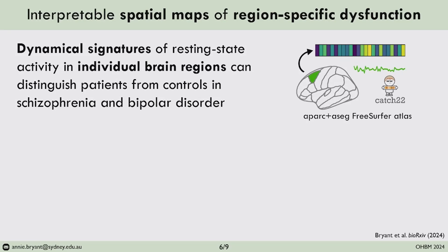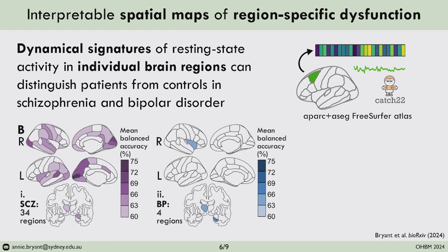I will fly through some of our key results just to give an overview of the types of hypothesis-generating insights that this approach offers, each of which could and should warrant further study in an external validation cohort. We were surprised to find that in schizophrenia and bipolar I disorder, the dynamical signatures of resting state fMRI activity within individual brain regions could distinguish cases from controls with up to 72% cross-validated balanced accuracy, which is surprising given that these neuropsychiatric disorders are generally framed as disorders of distributed dysfunction that cannot be pinpointed to one specific locus.